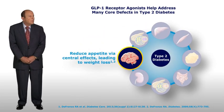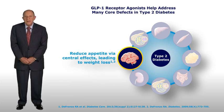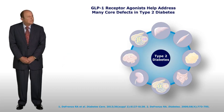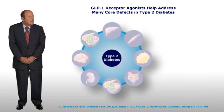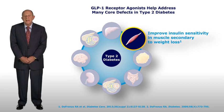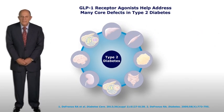Fifth, GLP-1 receptor agonists work centrally to inhibit appetite and food intake, leading to weight loss. Sixth, by causing weight loss, GLP-1 receptor agonists have the ability to improve insulin sensitivity in muscle.